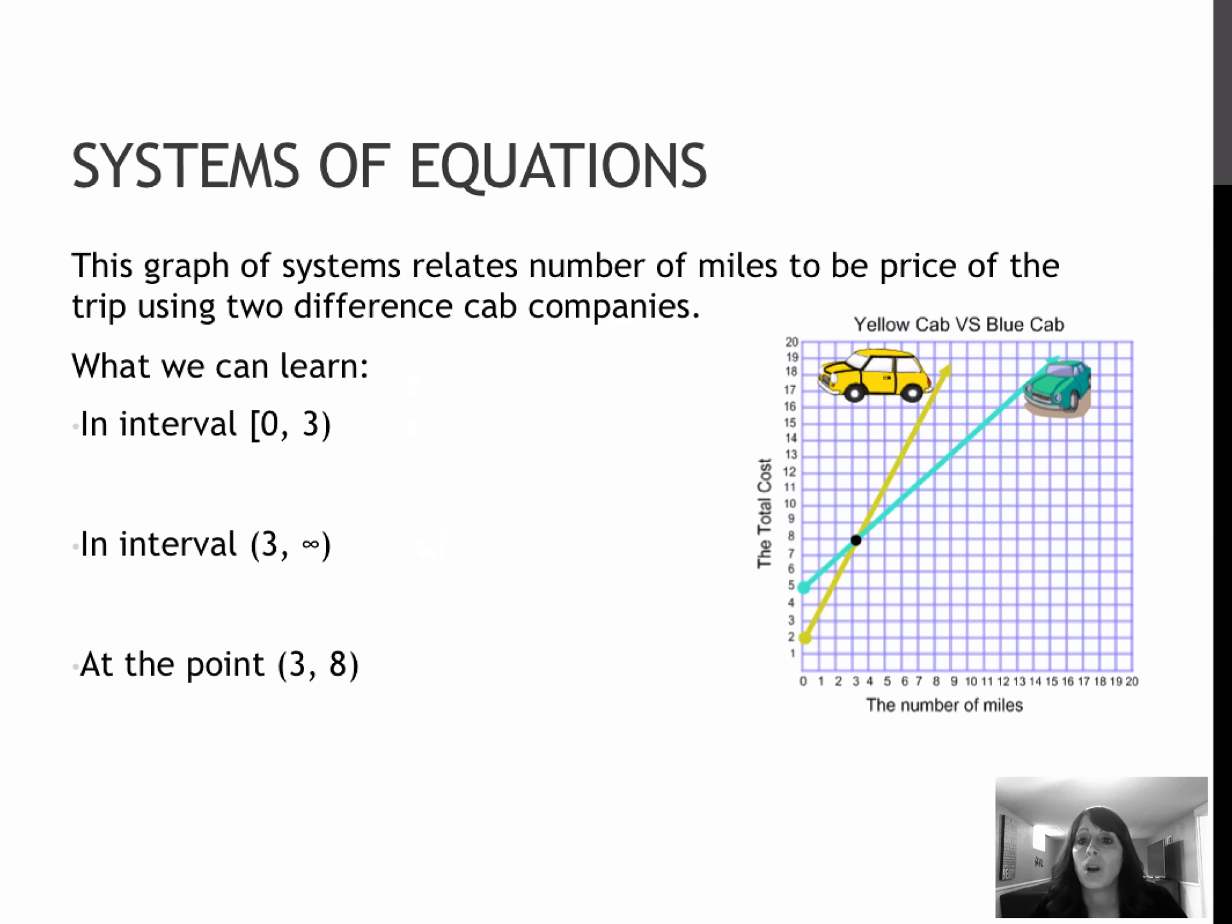Here's an example where I've already graphed both equations for you. One equation dealt with how expensive a yellow cab is versus how expensive a blue cab is. The total cost at zero miles is different, meaning the blue cab company charges more for you to get into the cab. But that line does not increase at the same rate as the yellow cab, so it's actually cheaper per mile for the blue cab. The yellow cab starts off much cheaper, but the price increases quickly.